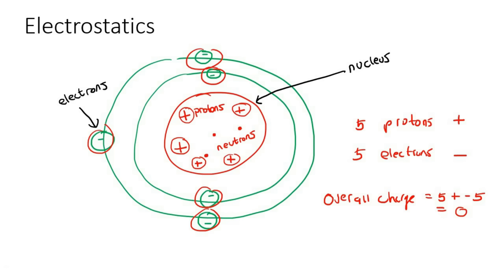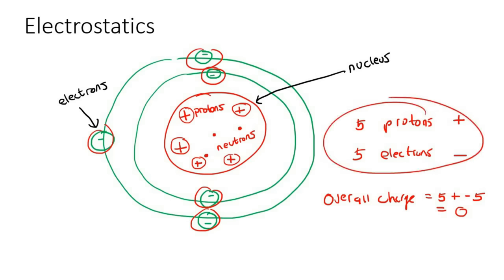But electrons, as we are going to learn in this chapter, electrons are able to move. They can decide to leave, or more electrons can decide to arrive, and that will affect the overall charge.